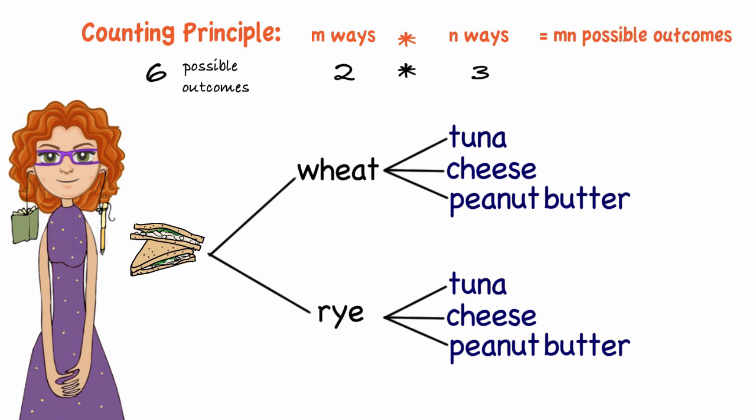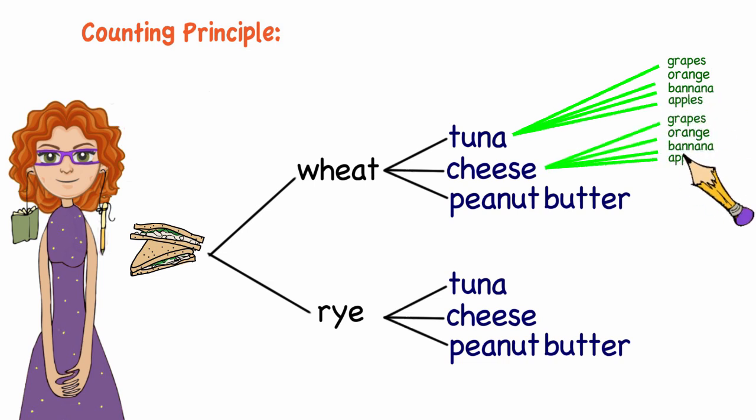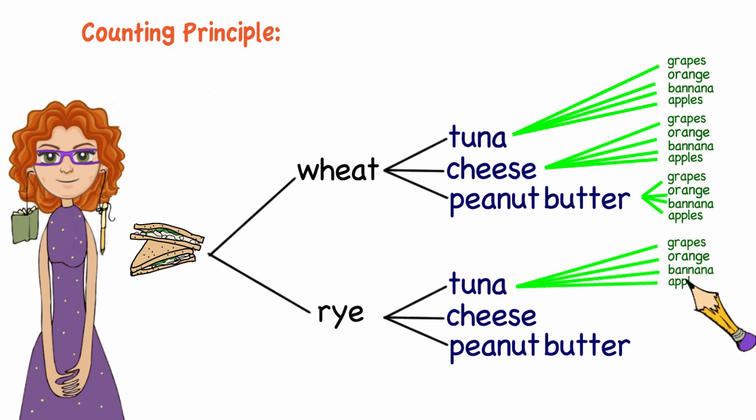So let's extend this example by adding one of four different fruits to my lunch. I happen to have grapes, oranges, bananas, and apples at home. When I draw out the graph, you can see it becomes pretty cumbersome very quickly. And the more choices I have, the more complex drawing it all out is.